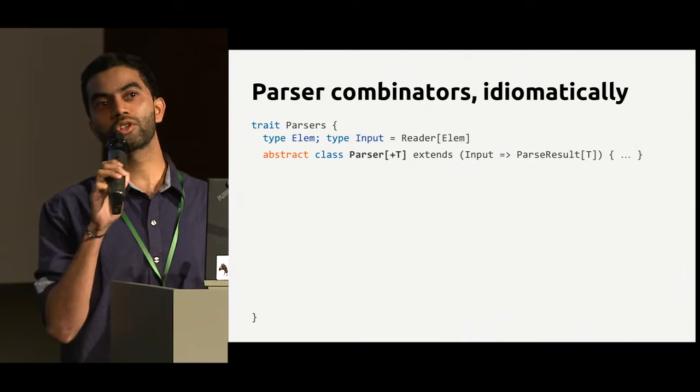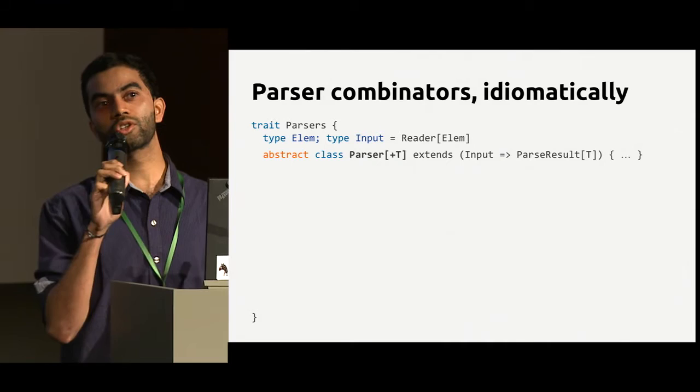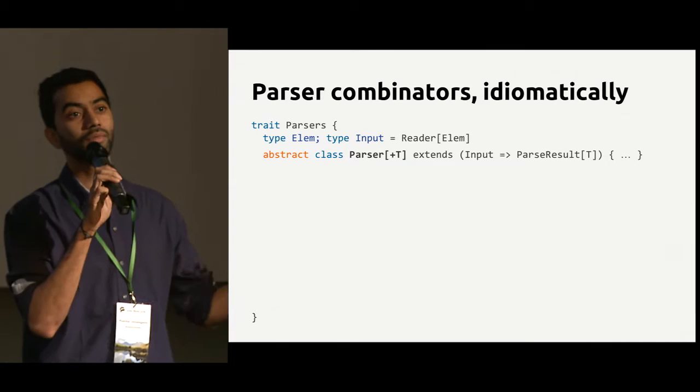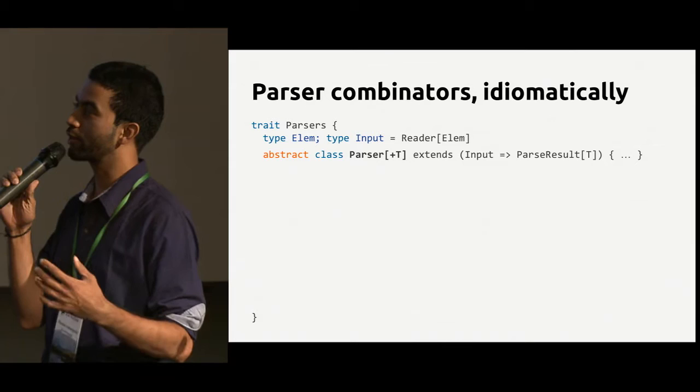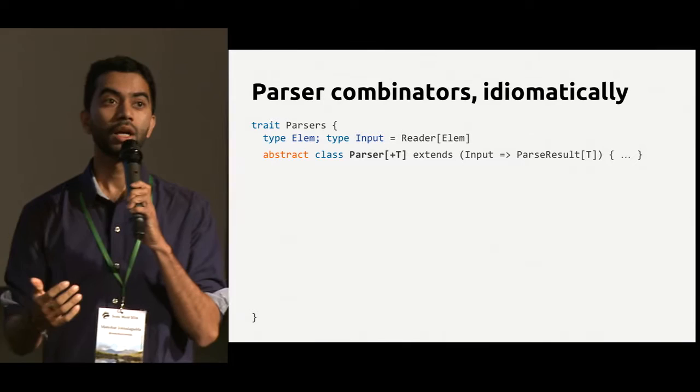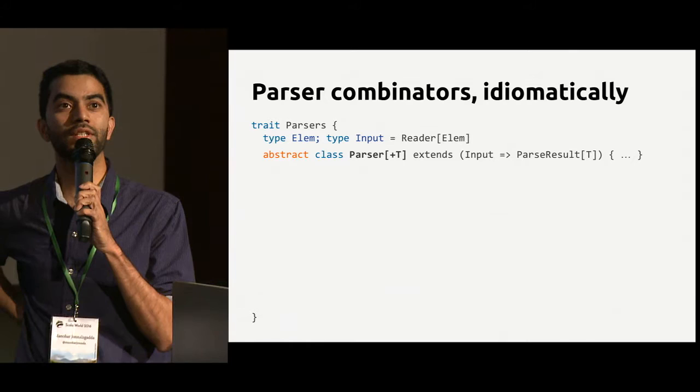Let me show you what parser combinators look like idiomatically. A parser combinator is a function that takes an input and returns a result — it tries to read some sort of input and create a structure out of it. In this type signature, a parser of T will parse an input and return potentially a result of type T. In the previous example, a parser for JSON is a parser of type JSValue.